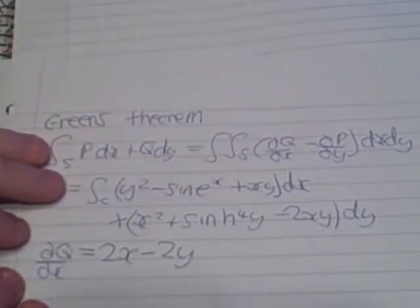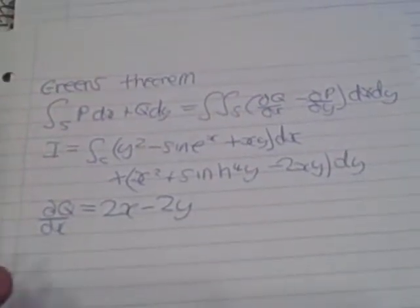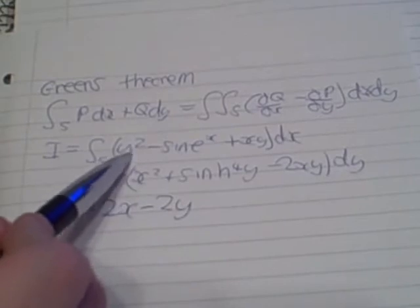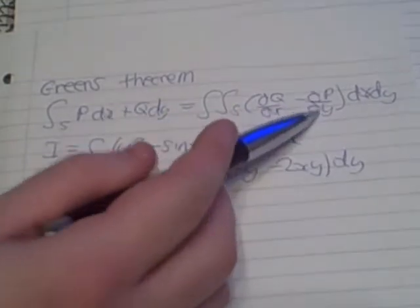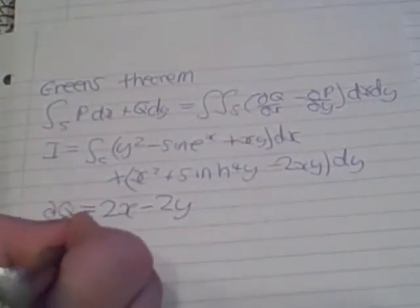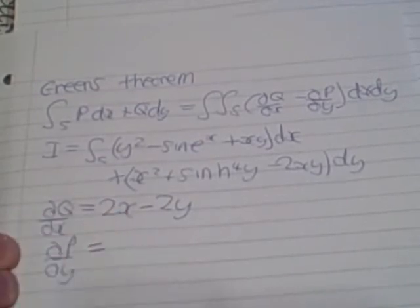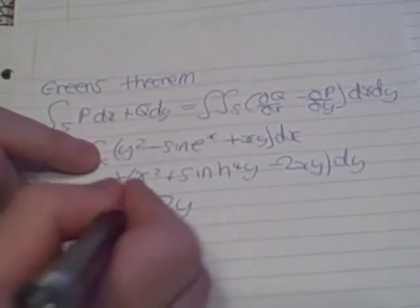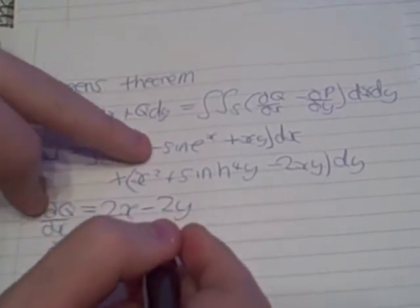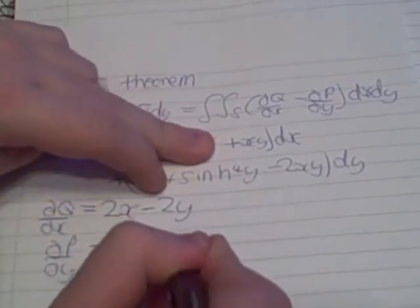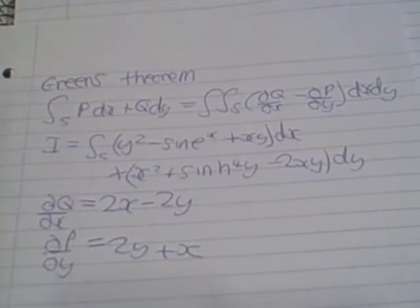And again, we have to do the same for our p, which to differentiate that with respect to y. So dp over dy equals, we're here, which is 2y. There's no y's in here. So dp over dy plus x.